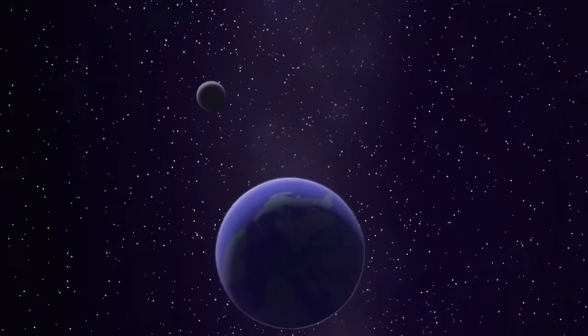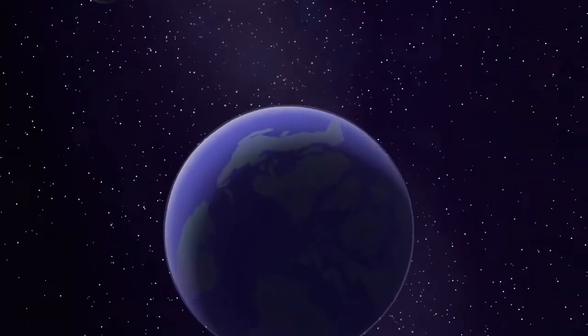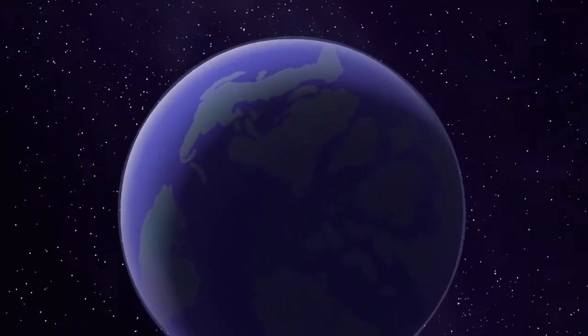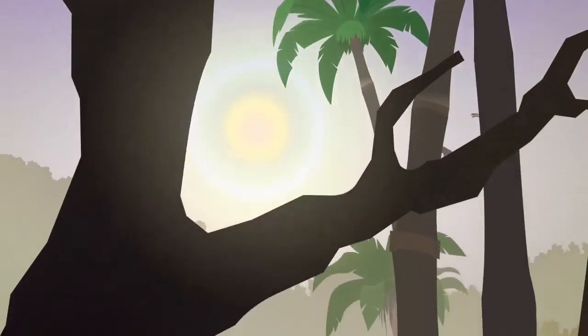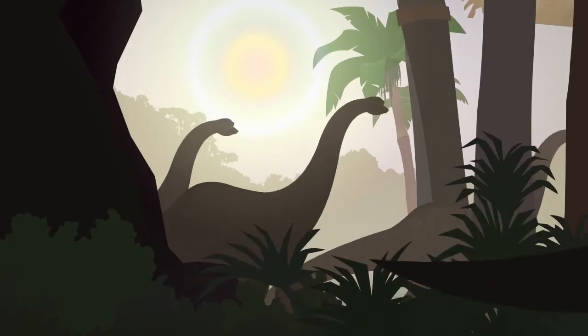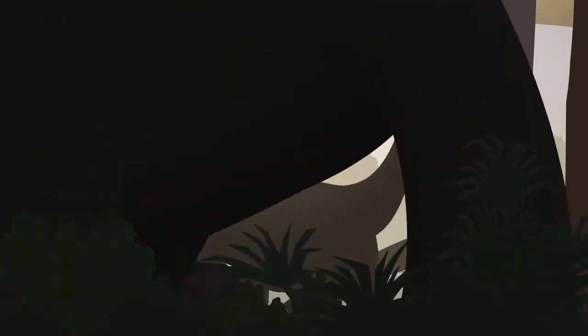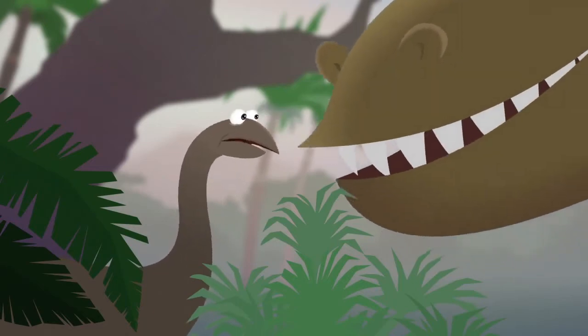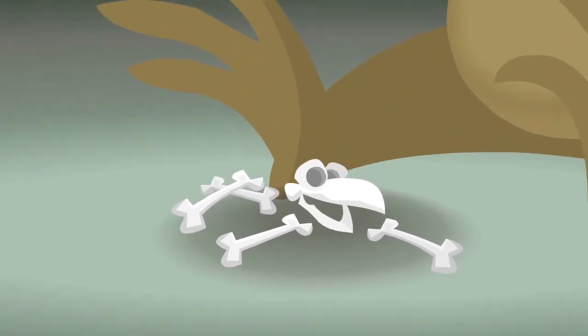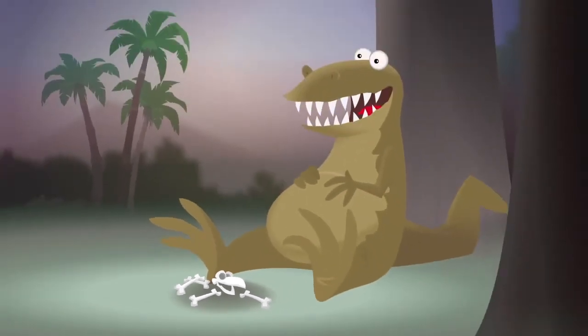This is the Earth as it looked 90 million years ago. Geologists call this period the Late Cretaceous. It was a time of extreme global warming when dinosaurs still ruled the planet. They went about their lives, secure in their place at the top of the food chain, oblivious to the changes taking place around them.